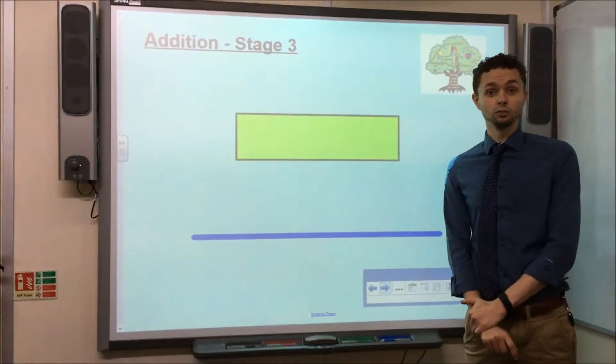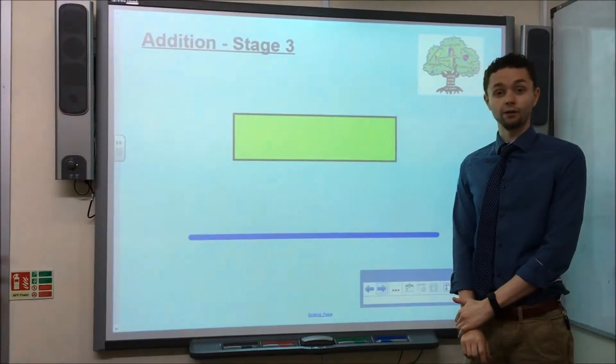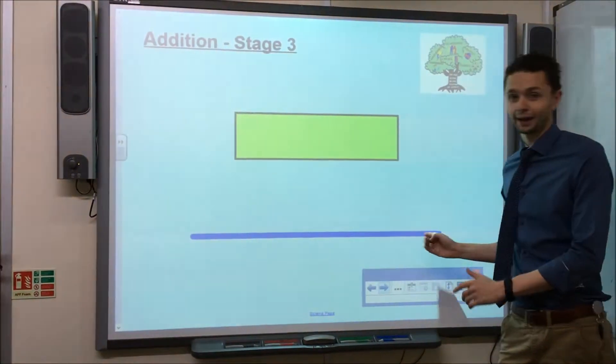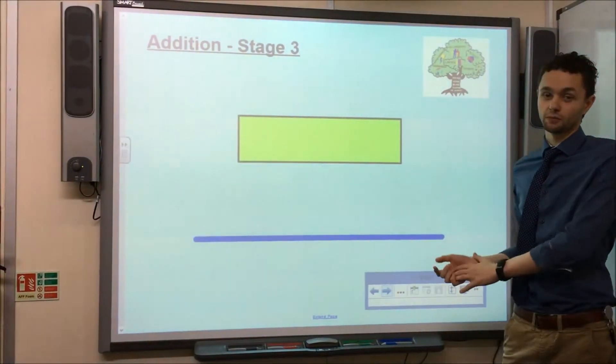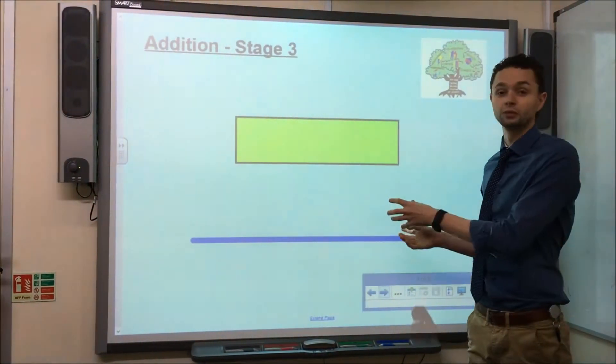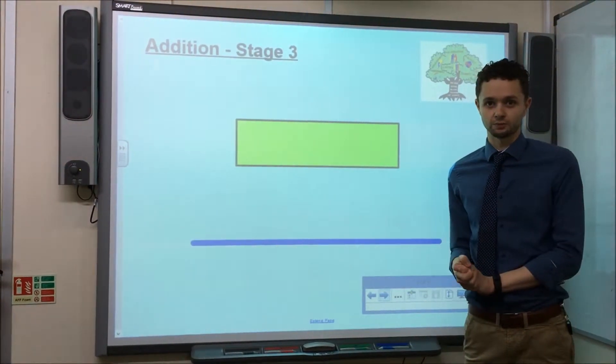Stage 3 involves a number line, just like Stage 2, however in this case the number line is blank, with no numbers along the bottom. It's the children's job to put the numbers there themselves, depending on what the calculation is.